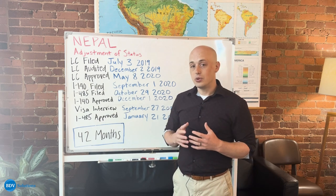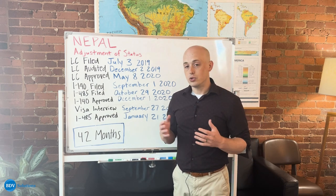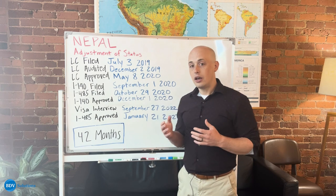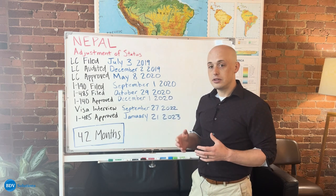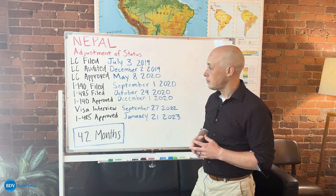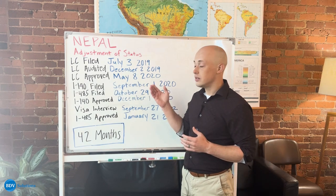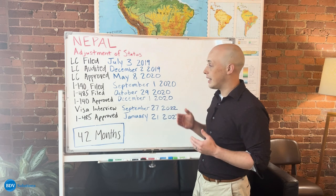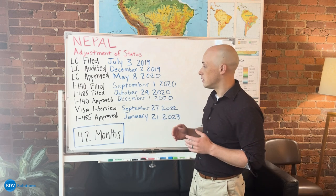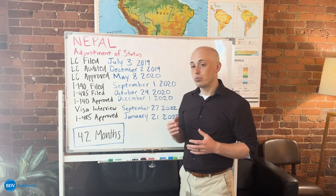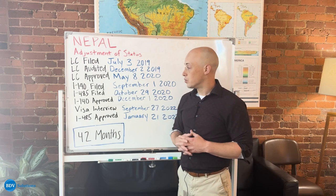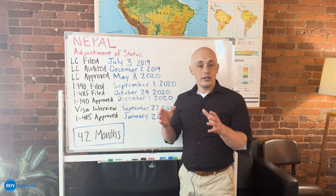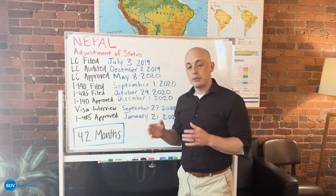In fact, audits are issued at random to about 33% of LCs that are submitted. As you can see, this LC was approved shortly after the audit had been received. They got their approval in May of 2020, and that ends your process with the Department of Labor.